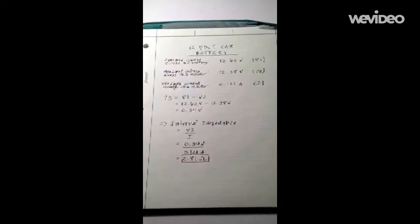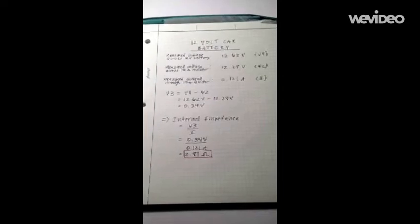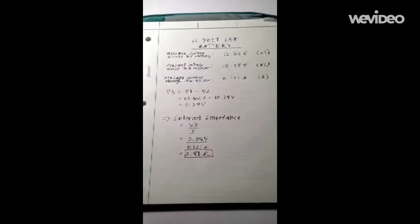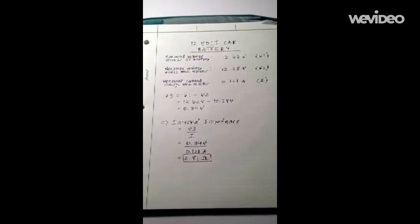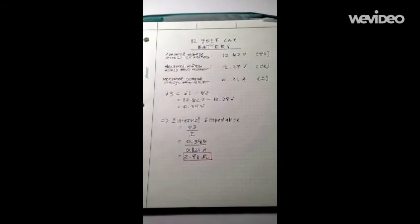The final calculation is to divide that voltage by the current measured through the 100 ohm resistor. 0.3 volts divided by 0.121 amps is 2.81 ohms, which is the internal impedance.